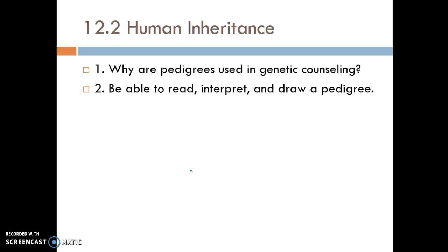Section two: why are pedigrees used in genetic counseling? Pedigrees are used in order to trace a familial trait, whether it's a disease or just a trait you want to follow through, like blood type through three or four generations. Make sure that you can read, interpret, and draw a pedigree. You're really going to have to be able to interpret at least one on the test, so make sure you look back over those — we've done quite a few in class.